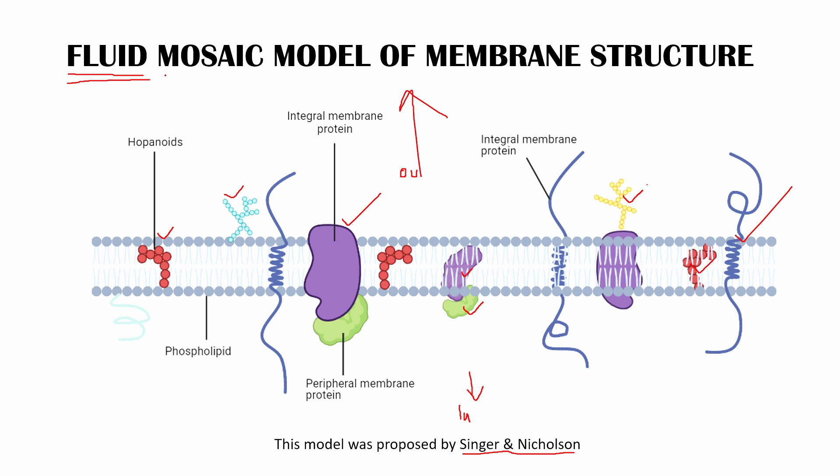Then why is it called a mosaic? Now it is simple as that. Mosaic - we call this mosaic because there are various types of components you can see. You can see a hopanoid, you can see a glycolipid, you can see an integral membrane protein, you can see another hopanoid here, you can see another integral membrane protein here, peripheral membrane protein, integral, then glycoprotein. So you are seeing various components and because it is having various components, that is the only reason it is called mosaic.